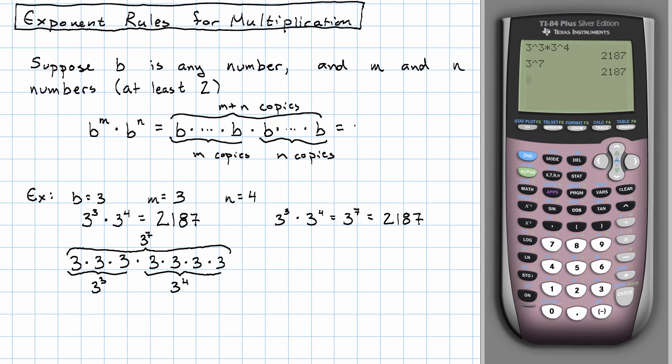So we'll just have b to the m plus n. So if we're multiplying two exponential expressions with the same base, we just add the exponents.